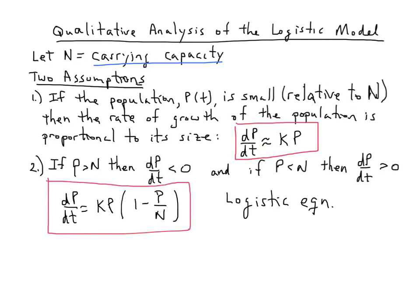I just want to verify that we see both of the assumptions built in here. When P is small, when P is small relative to N, so for example the population is 10 and the carrying capacity is a million, 10 over a million is a small number. 1 minus such a small number is approximately 1, and we see that our rate of growth is approximately k times P. So our population growth rate will be approximately the same as the unlimited growth. It looks like it's a rate of growth that's proportional to the size of the population as long as P is small relative to N.